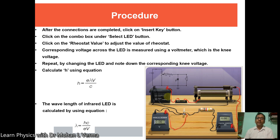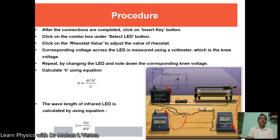Now the procedure. After the connections are completed — as shown in the circuit diagram — click on 'Insert Key'. In the virtual session, click on the combo box under the 'Select LED' button, then adjust the rheostat to get a particular value of resistance. The corresponding voltage across the LED is measured using the voltmeter shown in the figure.